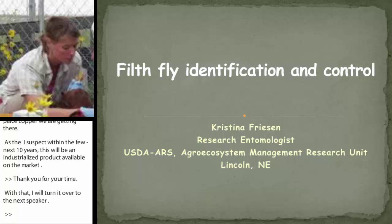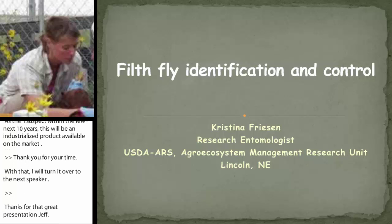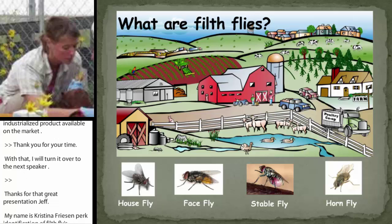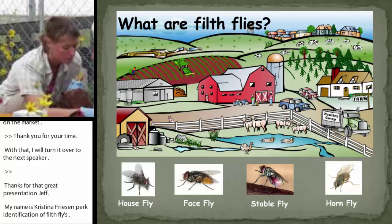My name is Christina Friesen, and today I'm going to briefly cover the identification and control of filth flies. Filth flies are flies associated with garbage, carrion, or manure. There are quite a few kinds of flies that fall into this description, but today I'm going to discuss just four of them — the ones that develop in manure or manure-impacted environments.